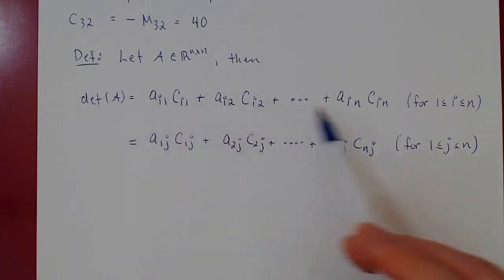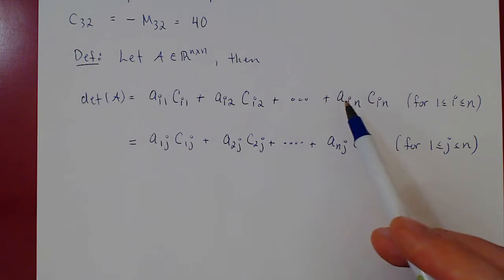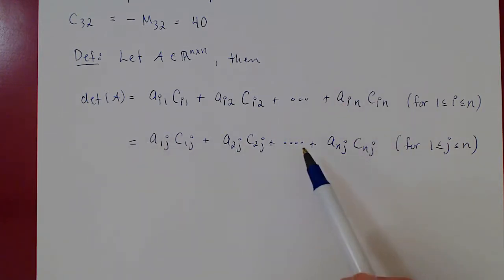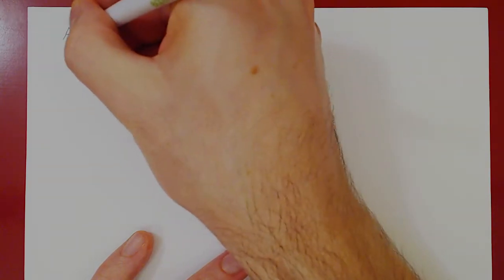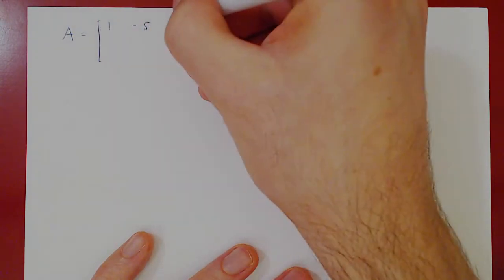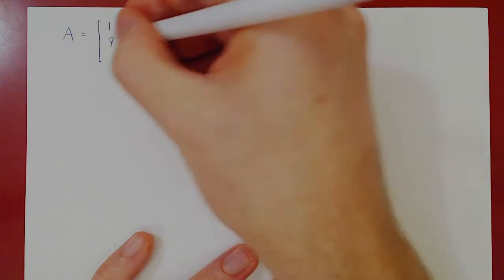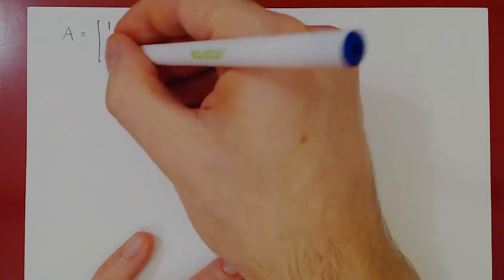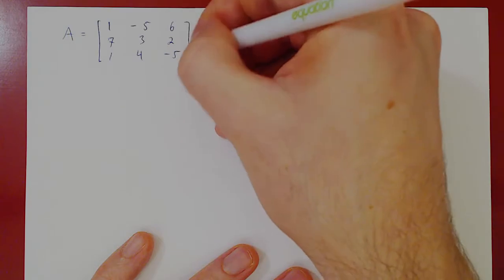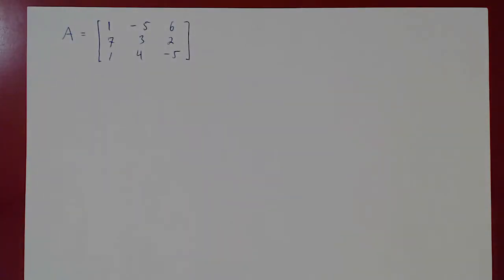Expanding along a row is called cofactor expansion along the i-th row; expanding along a column is called cofactor expansion along the j-th column. Let's go back to our original matrix and compute its determinant using a row and then a column to confirm we get the same answer. Our matrix A is: 1, negative 5, 6; 7, 3, 2; 1, 4, negative 5. Let's find the determinant with cofactor expansion along row 1.